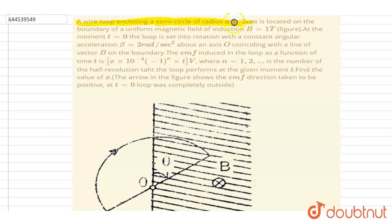B equals to one tesla. At the moment t equals to zero, the loop is set into rotation with constant angular acceleration two radians per second square about O coinciding with the line of vector B on the boundary.